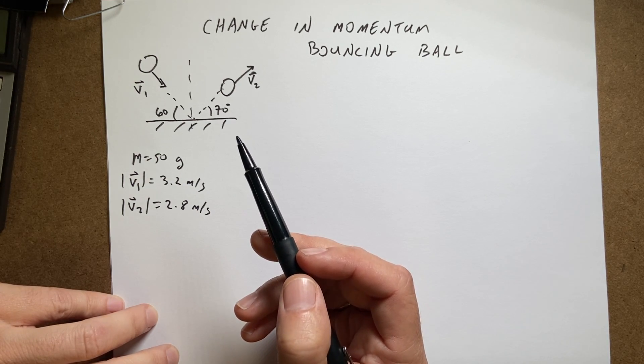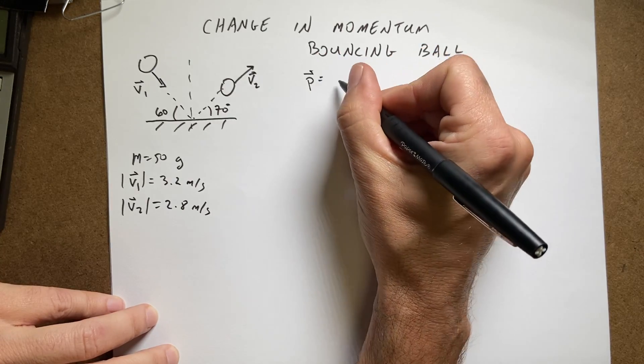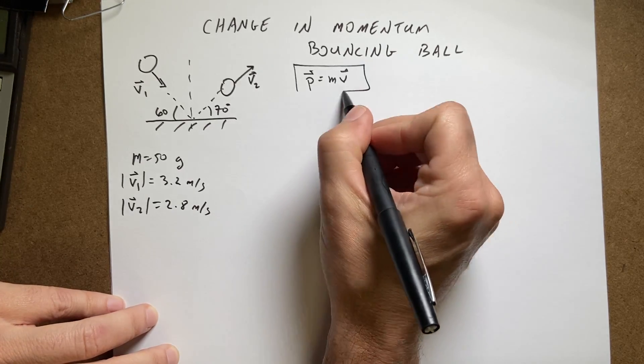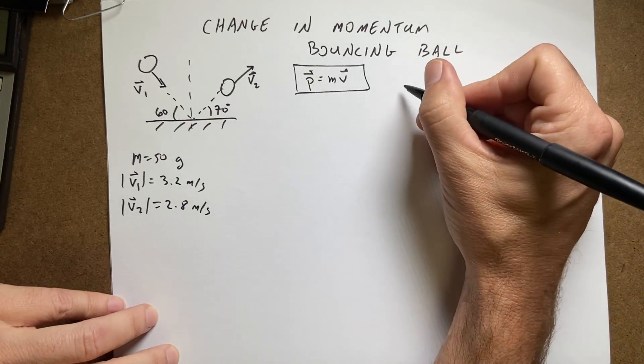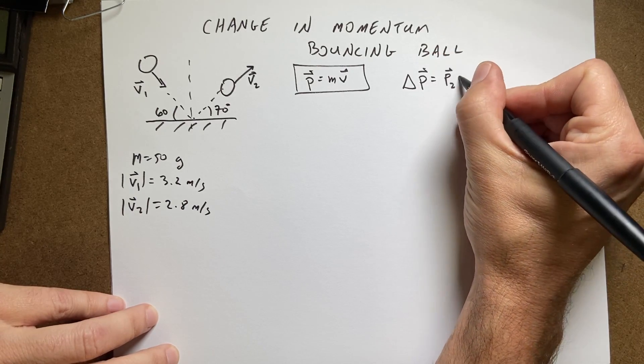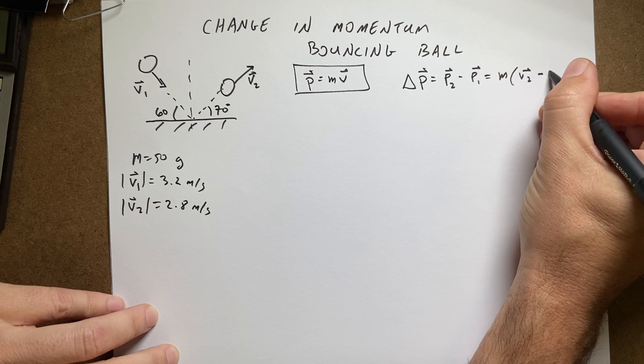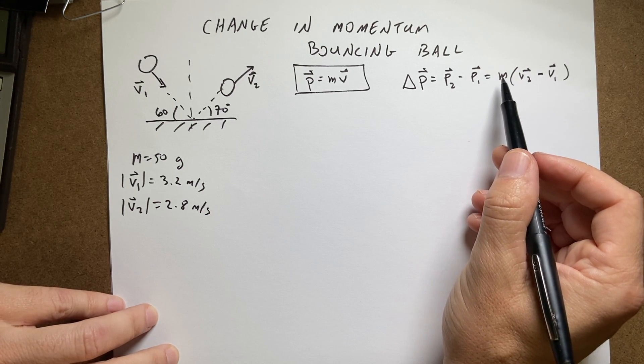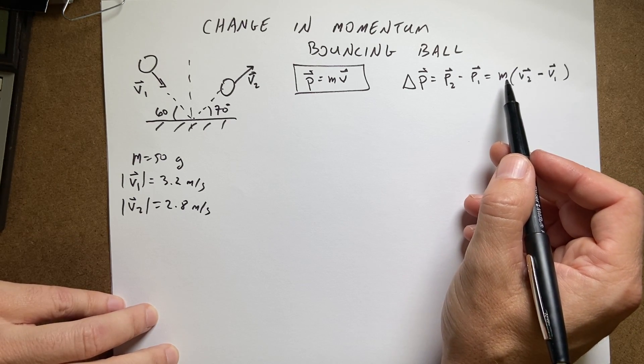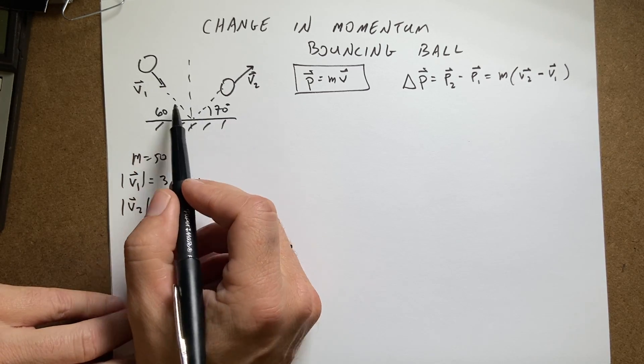So we also care about the change in momentum because that has to do with the force. So here momentum in general is defined as the mass times velocity. This is true as long as the object is moving slow and we can deal with it there. So the change in momentum delta p is just going to be p2 minus p1 equals m times v2 minus v1. Because the mass doesn't change I can factor that out and I can deal with just the velocities and multiply it by the mass in the end. In this case the ball starts off with a different angle and a different speed than it ends up with.